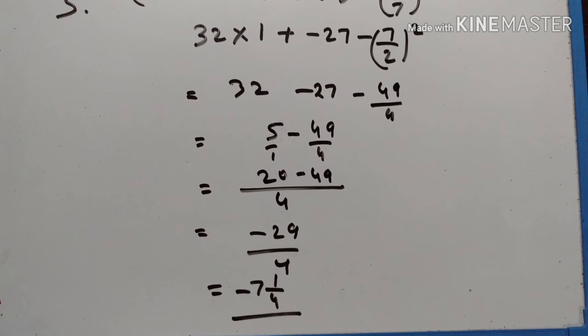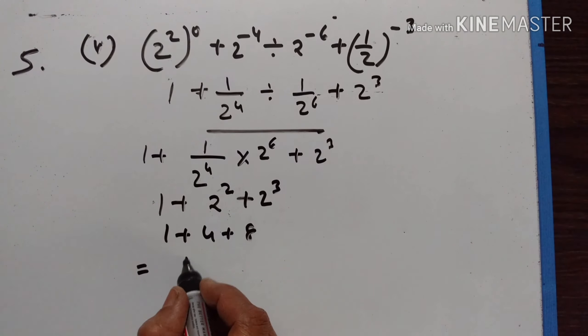2 squared raised to the power of 0 is equal to 1, plus 1 upon 2 raised to the power of 4, divided by 1 upon 2 raised to the power of 6, plus 2 raised to the power of 3. According to BODMAS rule, we have to solve this first: 1 plus 1 upon 2 raised to the power of 4, into 2 raised to the power of 6. This is 6 minus 4: 1 plus 2 raised to the power of 2, plus 2 cubed. 1 plus 4 plus 8 — 8 plus 5 is equal to 13.